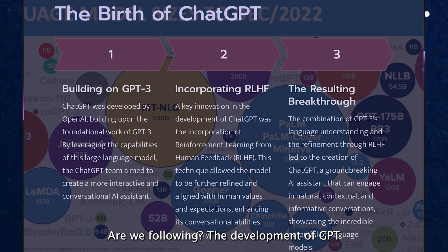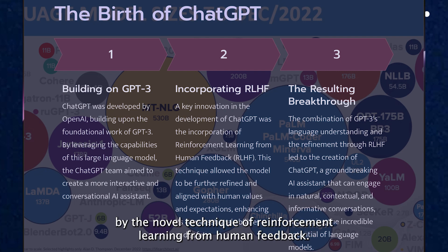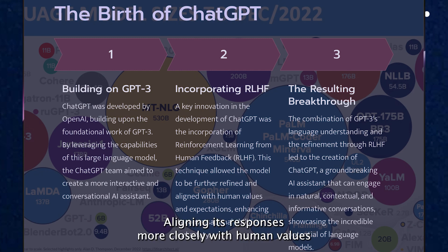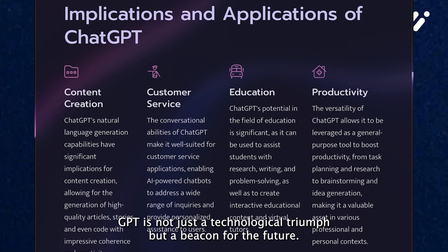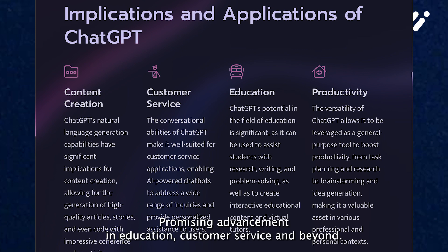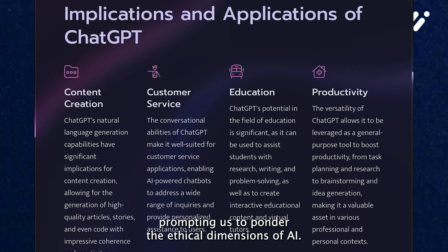Are we following? Built upon the legacy of GPT-3, ChatGPT emerged, refined by the novel technique of reinforcement learning from human feedback, aligning its responses more closely with human values and expectations. The evolution of ChatGPT is not just a technological triumph, but a beacon for the future, promising advancements in education, customer service, and beyond. Yet with great power comes great responsibility, prompting us to ponder the ethical dimensions of AI.